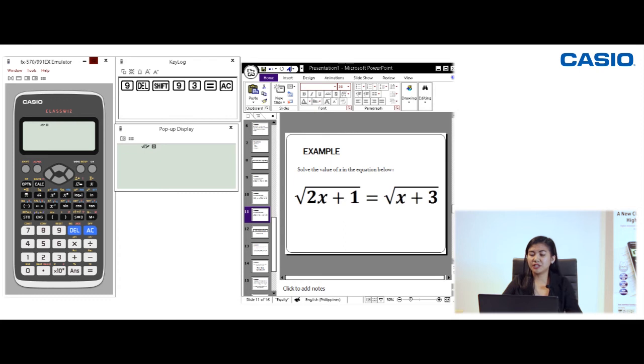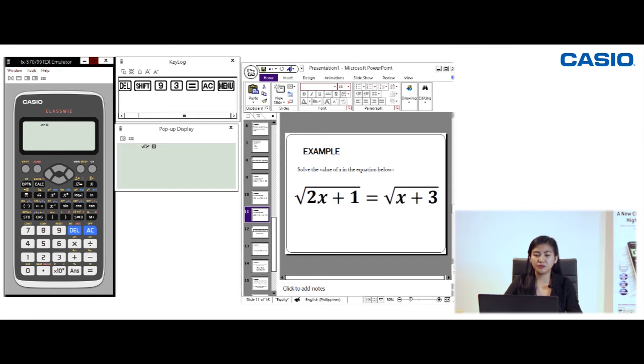So next example is the radical equation: square root of 2x plus 1 equals square root of x plus 3. So let's set this in calculation mode. Menu 1 and then enter the equation. So square root of 2x plus 1.